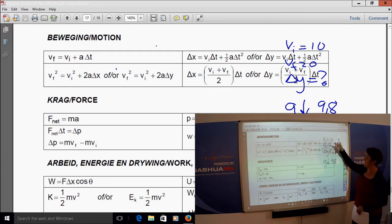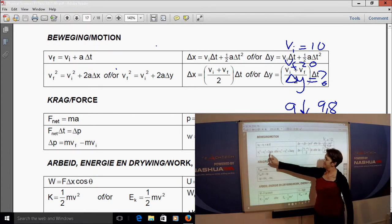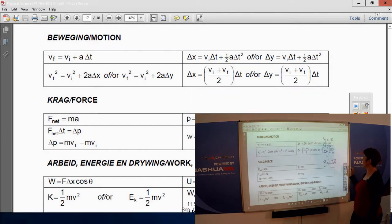We are looking for vi, vf, delta y and g. And the formula in which all of them are will be this one. So it will be vf square is vi square, plus 2a delta y.